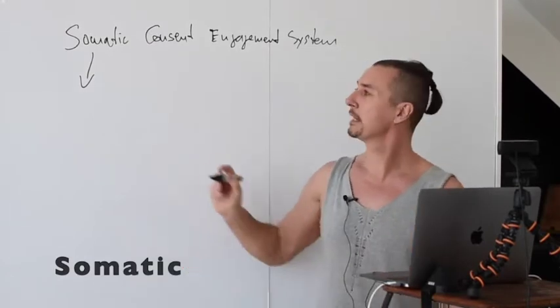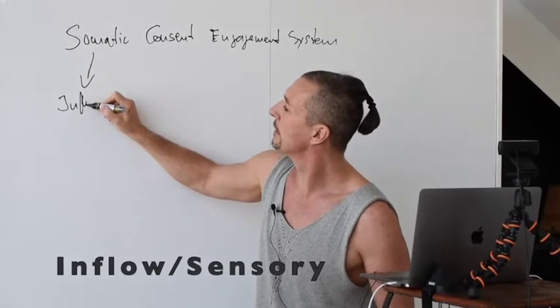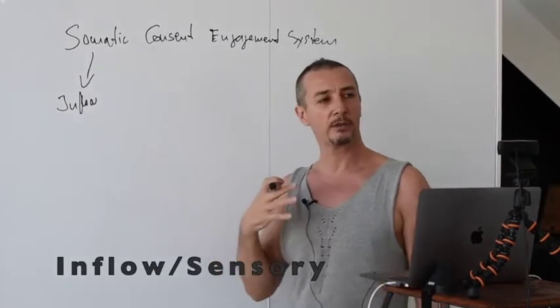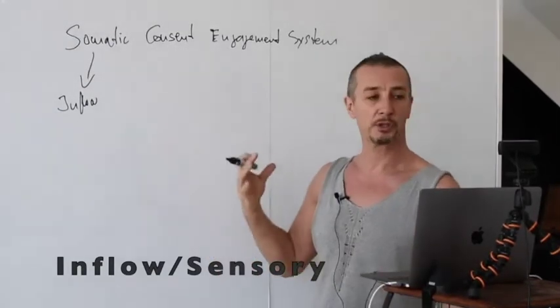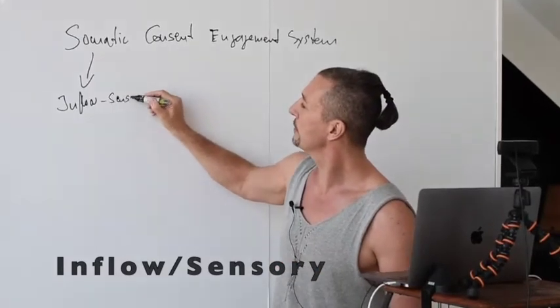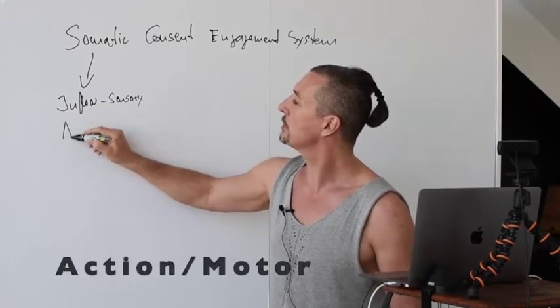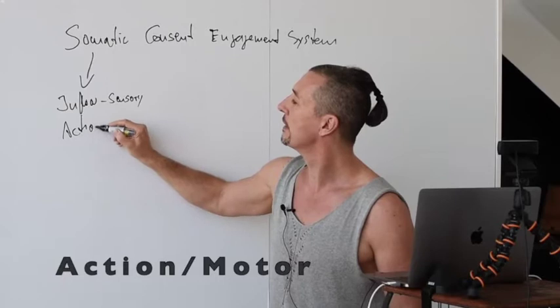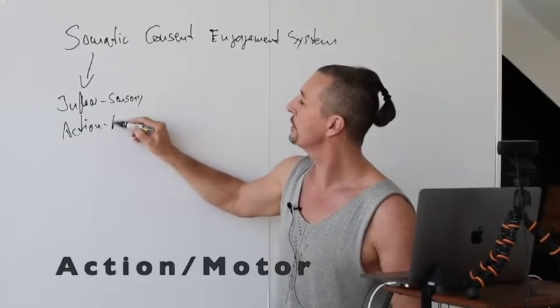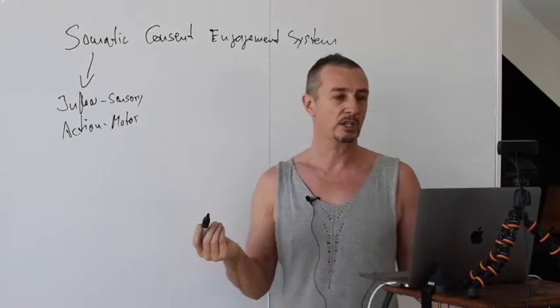Let's break down the first one, Somatic. Somatic is divided into the sensory inflow, so everything you can feel with your skin, with your body. Then we have the action, which is in the somatic nervous system the motor, so every action that you provide.